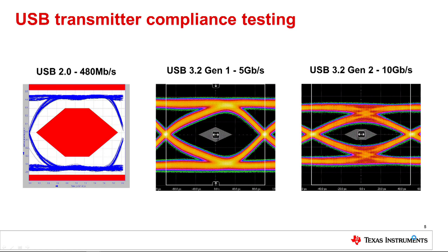A USB host, hub, and device are all required to pass USB compliance testing for certification. Without certification, a system, hub, or device is not able to display the USB logo signifying that it is compliant to the USB specification and cannot be sold or marketed as a USB product. The USB electrical compliance testing is comprised of transmitter and receiver testing. Transmitter testing verifies that the transmitter meets eye width, eye height, and jitter requirements using channel models consisting of a predefined PCB trace and cable. These measurements are taken at the end of the channel at the connector.